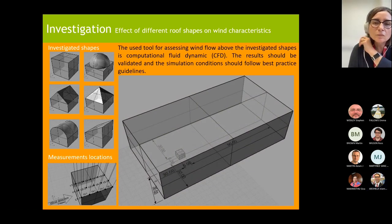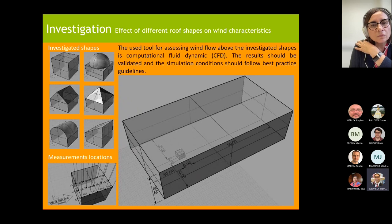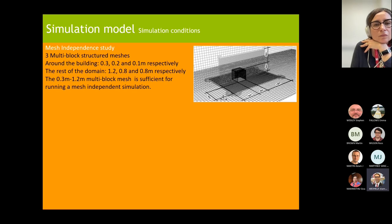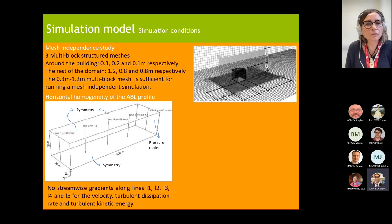We build a domain using ANSYS Fluent, place the building shape within it following best-practice CFD guidelines, and apply an inlet from the left-hand side simulating the atmospheric boundary layer profile. To have confidence in the simulation, we perform a mesh independence study — running three different mesh sizes to ensure simulation results do not change across those sizes, confirming that mesh quality is not affecting CFD results. Another important aspect proposed in this methodology is the horizontal homogeneity of the atmospheric boundary layer profile.